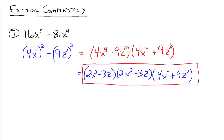This factored form looks more complicated than 16x to the 8th minus 81z to the 4th, but what we're trying to do here is learn how to rewrite expressions in terms of a product of factors. Later on, these products will help us find other things. That's all we have for the difference of two squares. Study well, and please let me know if you have any questions. Thank you.